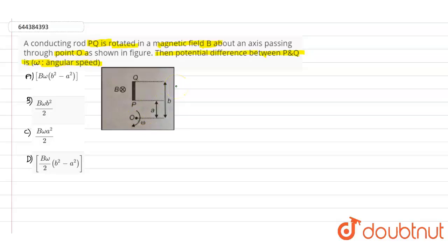We need to find out the potential difference between the point P and Q. So area swept out will be equals to area swept out by the rod.